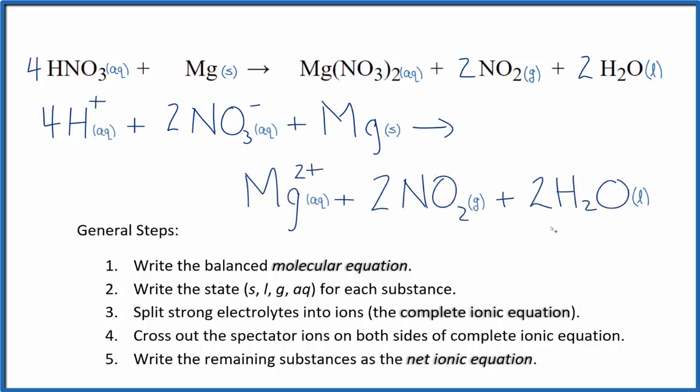So this is the balanced net ionic equation for nitric acid and magnesium metal here. You'll note that charge is the same on both sides. We have four plus and then two times one minus. So this whole side here is two plus, and we've got the two plus here on the magnesium.